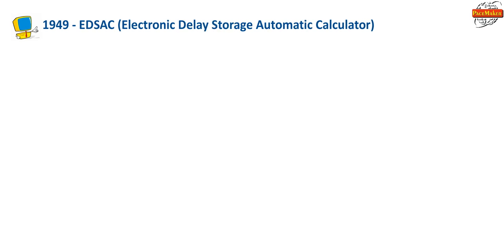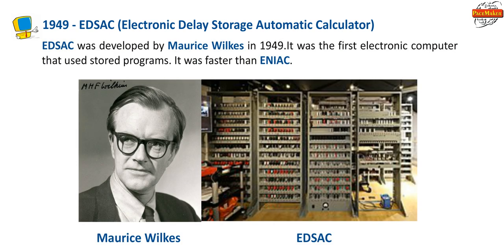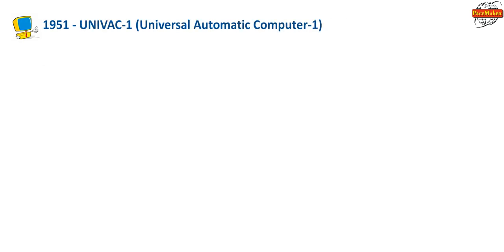1949 — EDSAC (Electronic Delay Storage Automatic Calculator): EDSAC was developed by Maurice Wilkes in 1949. It was the first electronic computer that used stored programs, which made it faster than ENIAC.